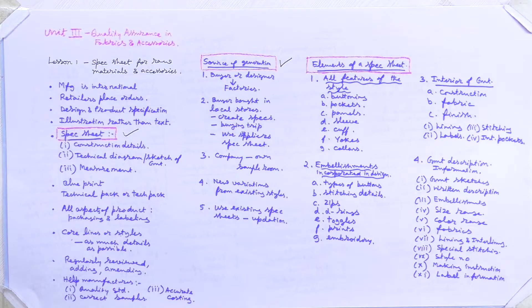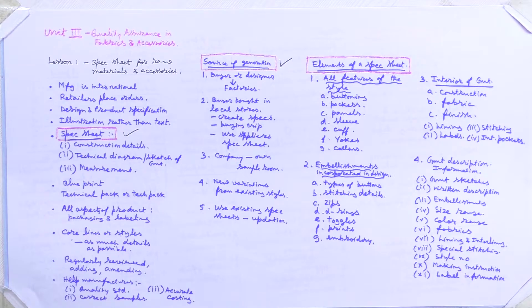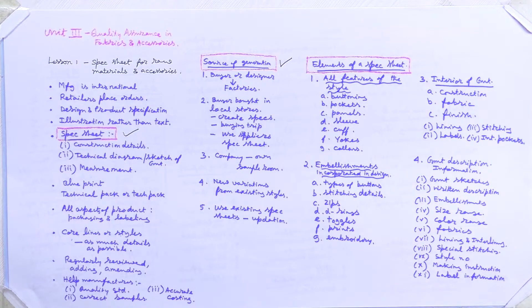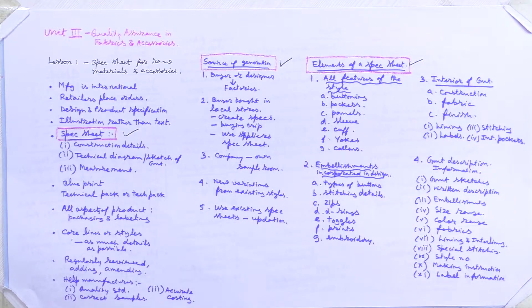In summary, there are five different sources of generation: first, the buyer or designer provides it to the factory; second, it is sourced from a market store and transferred to the factory; third, it is generated by the company's own sample room; fourth, it is a new variation from an existing specification sheet; and fifth, an existing specification sheet is updated. These are the five different sources of generation of the specification sheet.